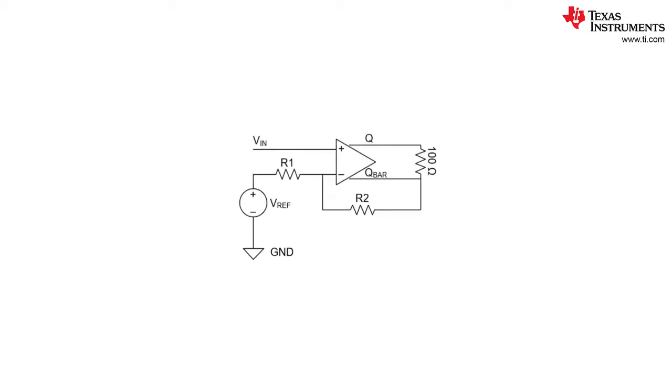This is the circuit configuration we will use to implement external hysteresis with LVDS outputs. To solve for the thresholds we must identify the threshold voltage node and solve for when the output is both high and low.